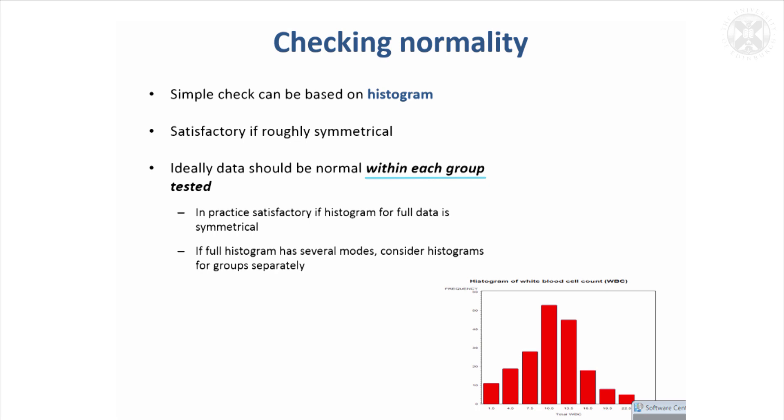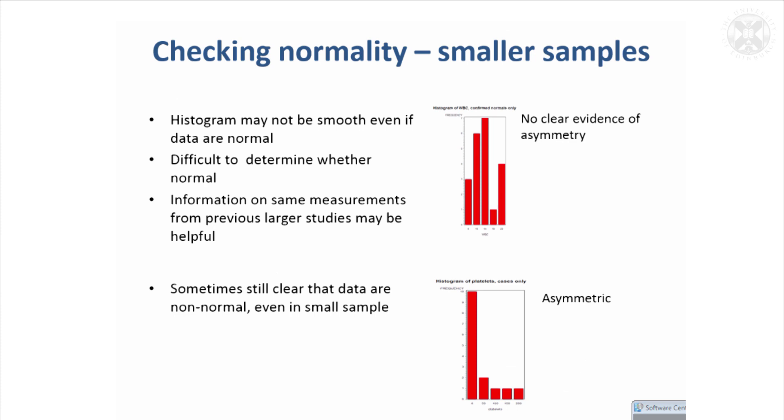One of the more difficult things about deciding what tests to use is you can never be completely sure your data are normally distributed. It's quite difficult to check. In practice, people will assume it even when they're not completely sure. It's a particular problem with smaller samples because the histogram won't always show whether the data are normal.